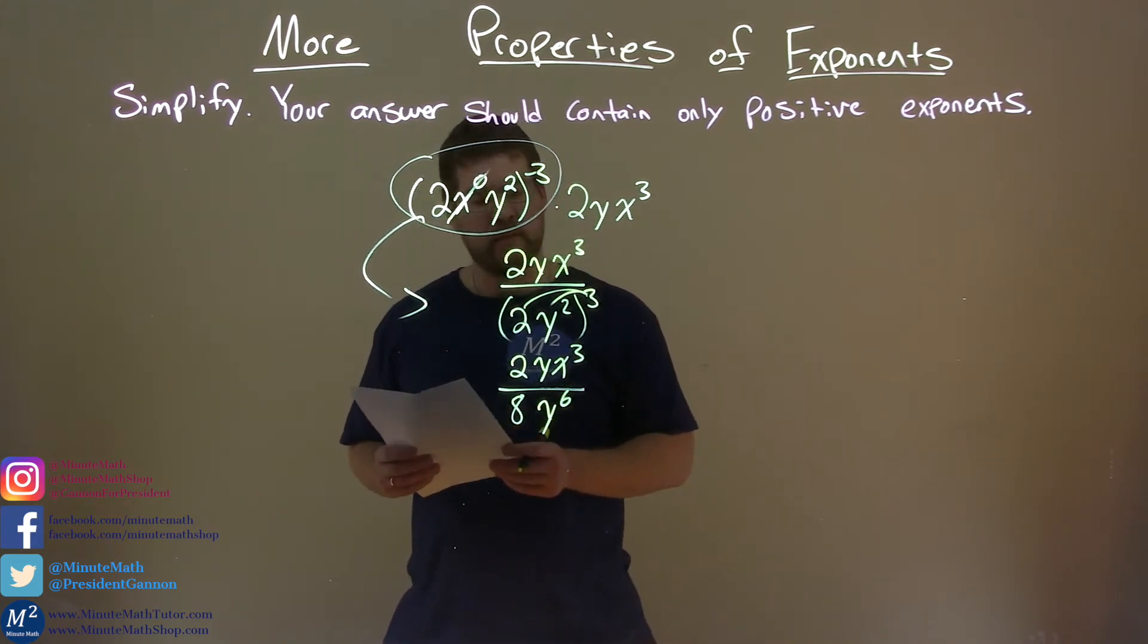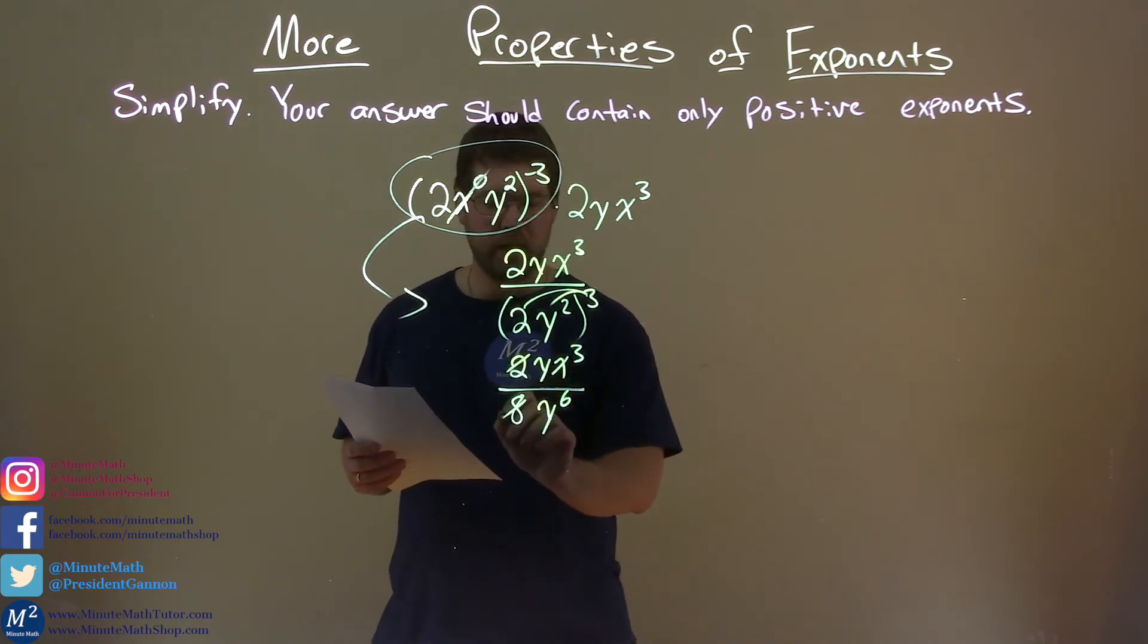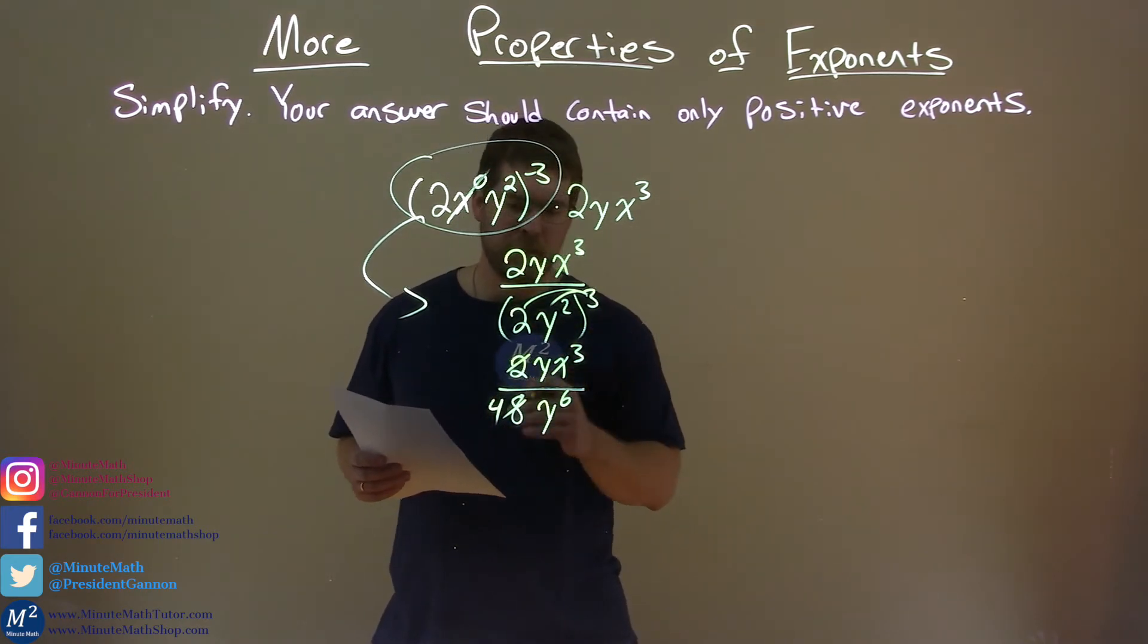And now we need to simplify a little more. 2 and 8, that becomes a 4, right? 2 divided by 8 is a 4, or 1 fourth.